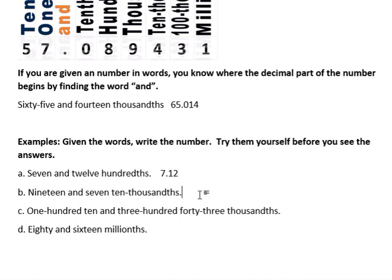And the next one we have 19 and 7 ten thousandths. So we have 19 and, that's your decimal point, ten thousandths, well ten thousandths would have, you can see from the chart above, 1, 2, 3, 4 places, and 7 only takes up one of those. So the zeros would come before that, 0, 0, 0, 7, 19 and 7 ten thousandths.